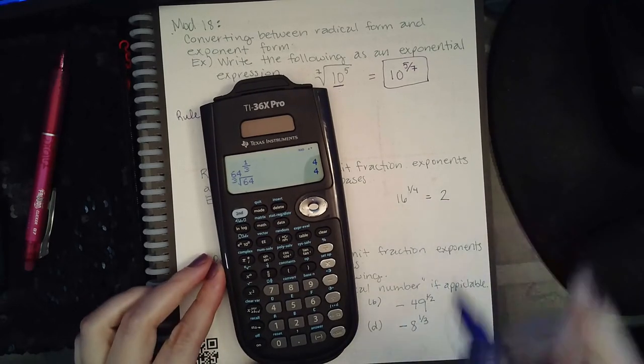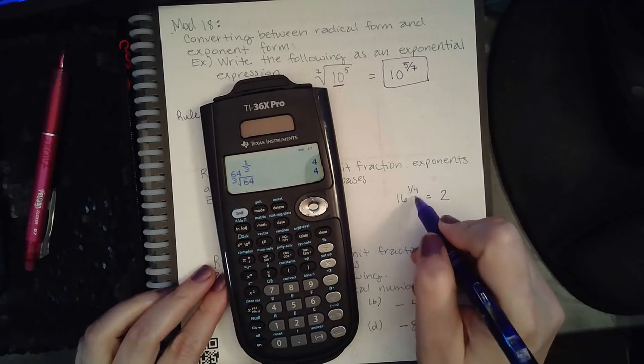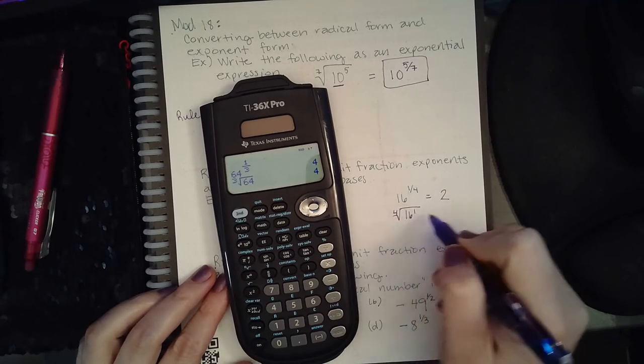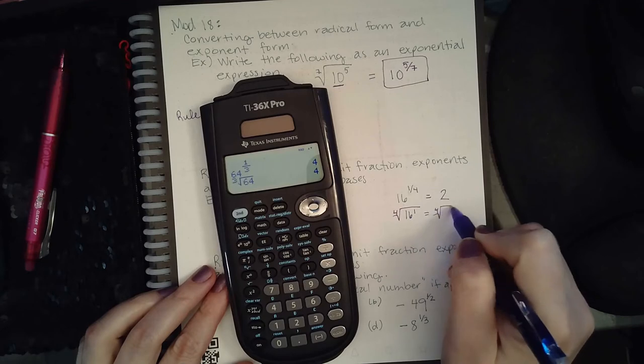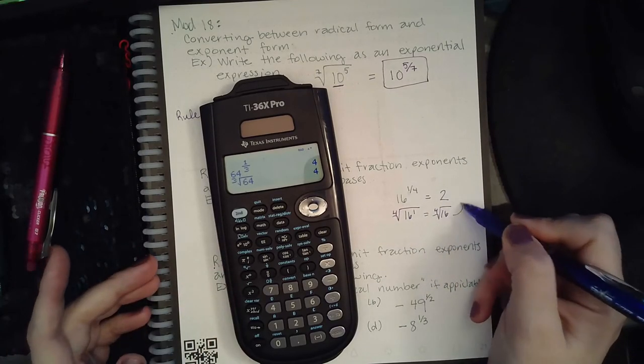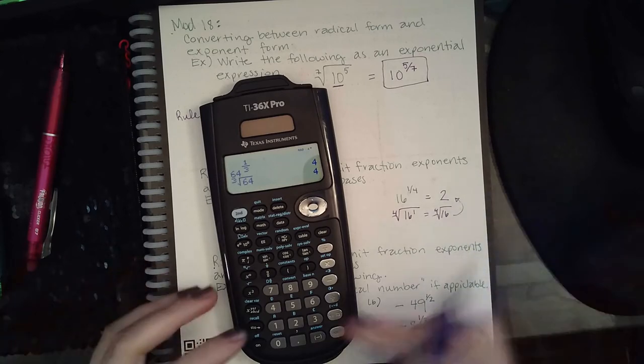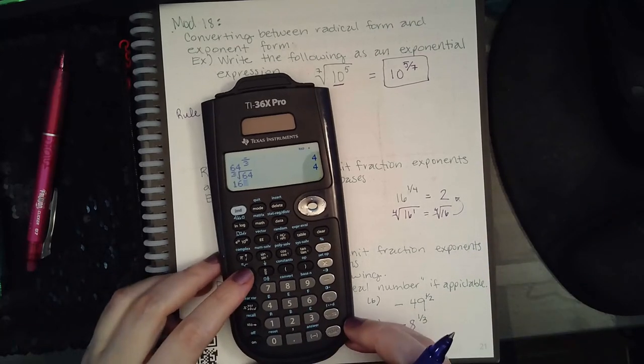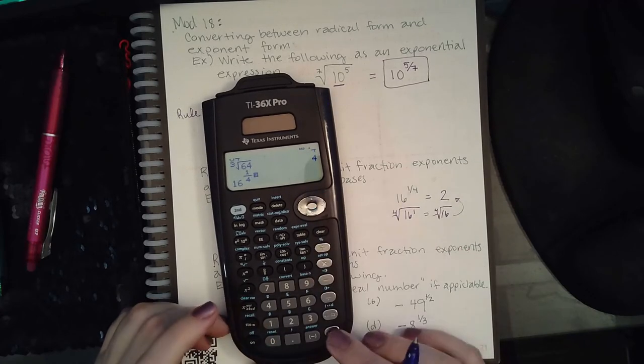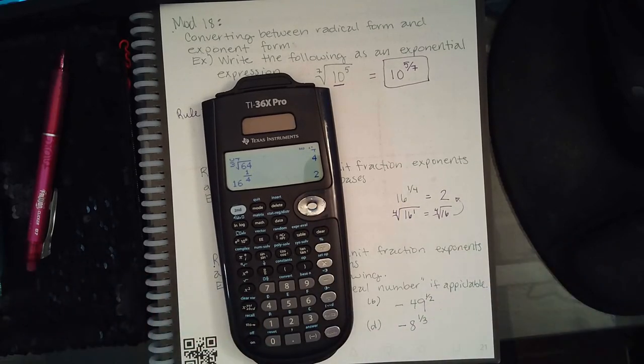For this problem, I'm pretty sure the answer is 2. I'm doing it in my head—this is the fourth root of 16 to the first power, which is the fourth root of 16, and 2 to the 4th is 16. If I didn't know that, I would type 16, exponent fraction 1 over 4, hit enter, and it would give me 2.